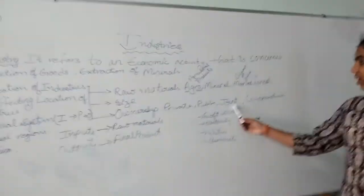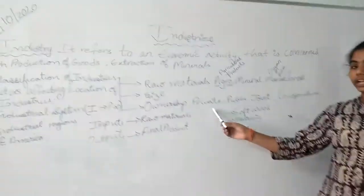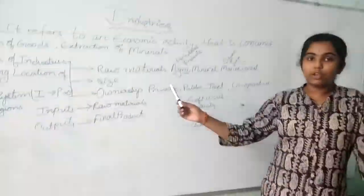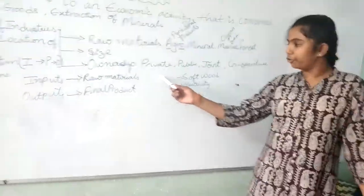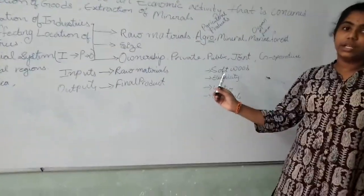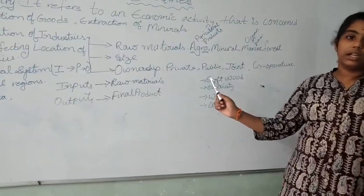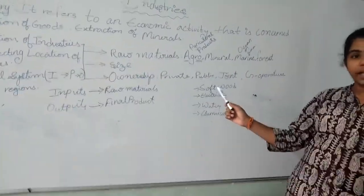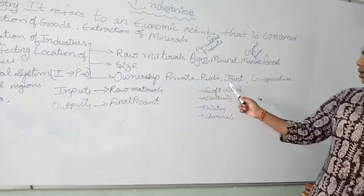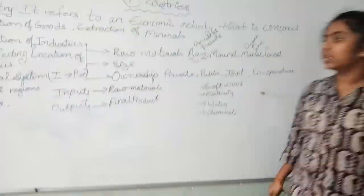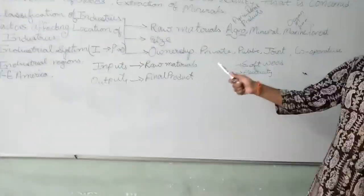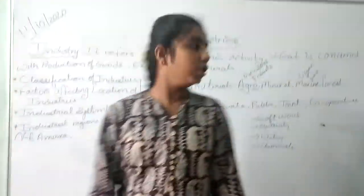Coming to ownership. In ownership we have 4 sectors: private sector, public sector, joint sector, and cooperative sector. Private sector is where the factory or industry is owned by a group of individuals or a single individual. Public sector industry is owned by the government. Joint sector means both private and public — both individuals and the government together own the company.